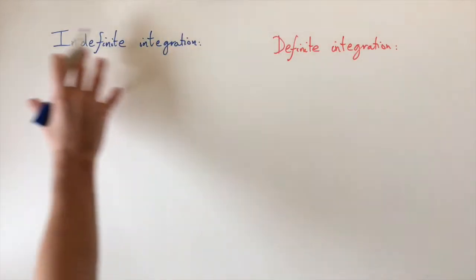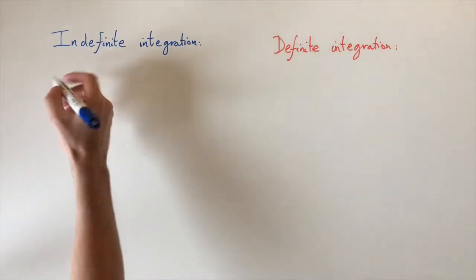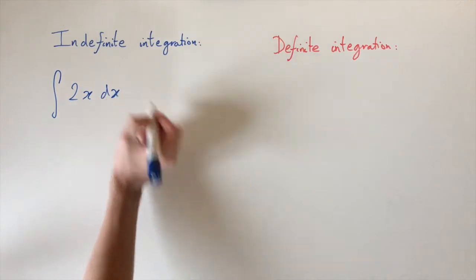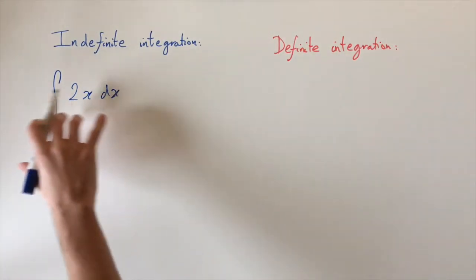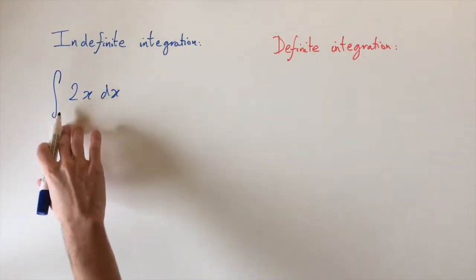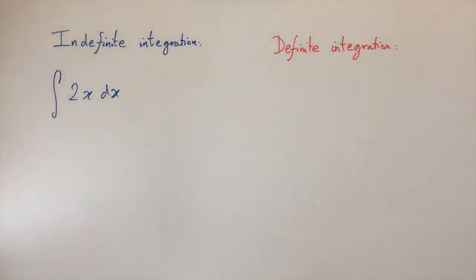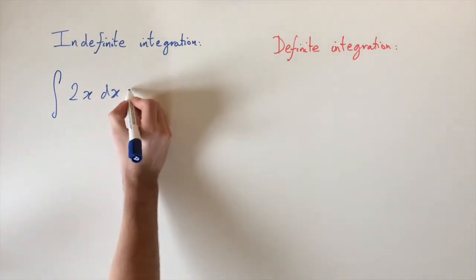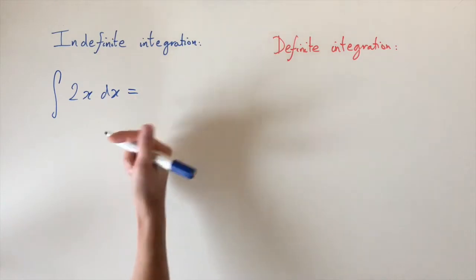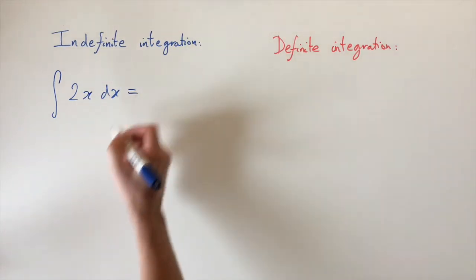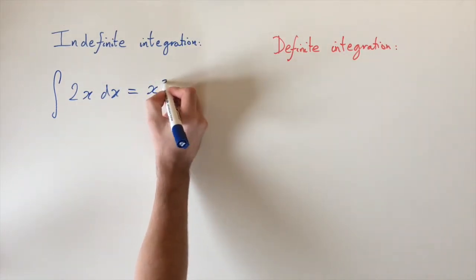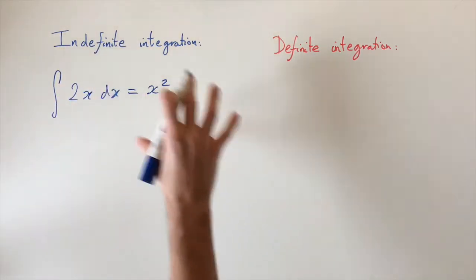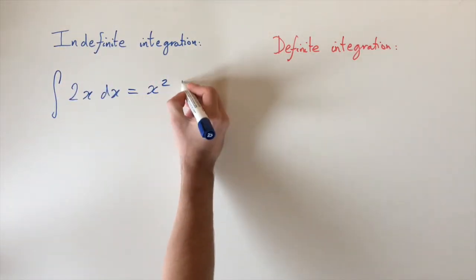If we first look at indefinite integration, an example of this would be the integral of 2x dx. What's characteristic here is that we don't have any limits that we're evaluating at. We simply integrate a function and get another function. You do the opposite of differentiation: raise the power by 1, divide by the new power, and this turns to x squared. With indefinite integration, we always need to add a constant plus c.